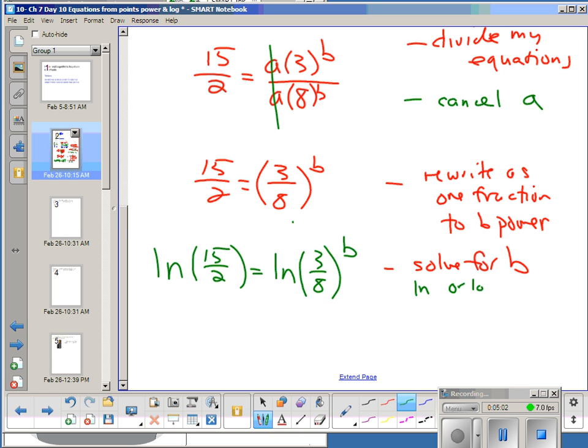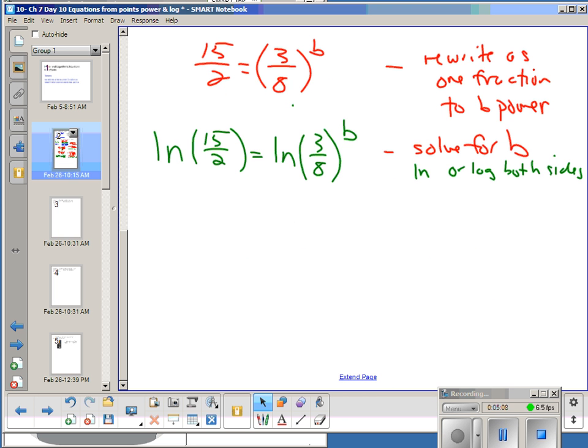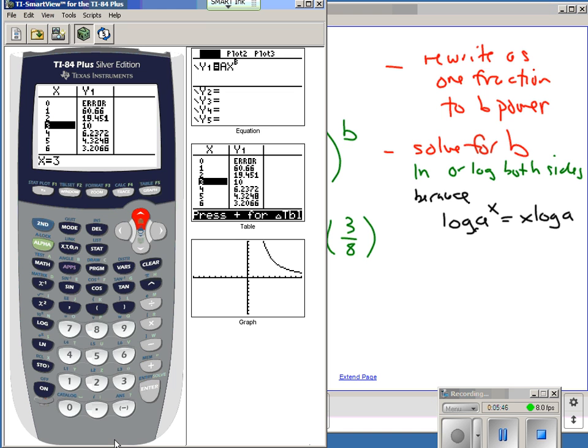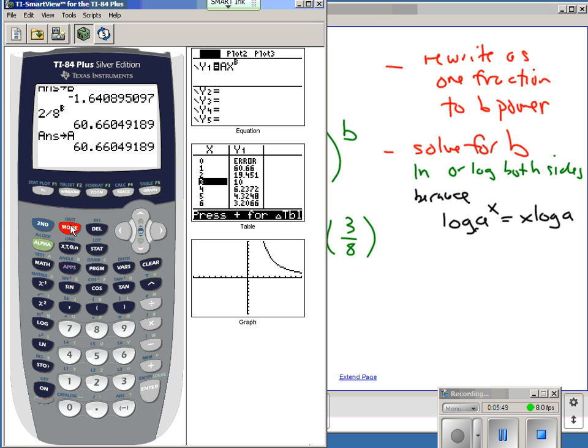In this case, so here we Ln or log both sides. The reason I do this is because of the laws of logs. The laws of logs say that log of A to the X power is X log of A. That is always true. And so it allows me to bring my exponent down. So now I have Ln of 15 over 2 is B Ln of 3 over 8. And everything but B here is a number.